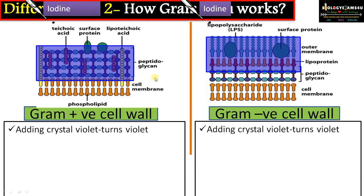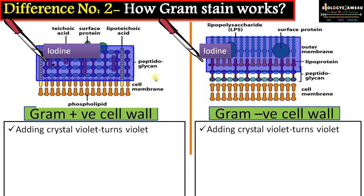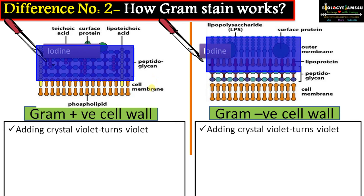The second step is adding iodine. Iodine is a mordant that makes the staining more effective, so the stain attaches more firmly to the cell wall.